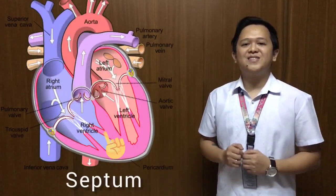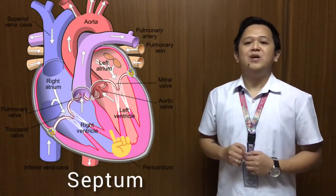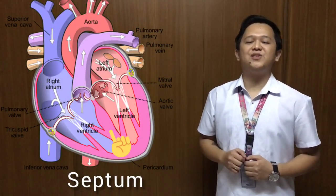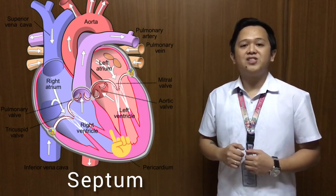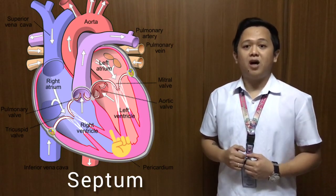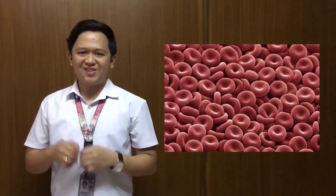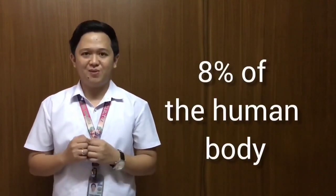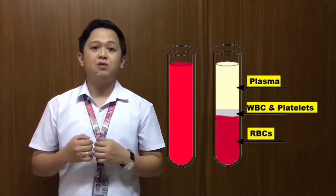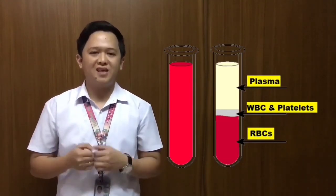A wall of tissue called the septum divides the heart in half, prevents blood from flowing between the two atria or two ventricles, and separates the flow of oxygenated or oxygen-rich blood and deoxygenated or oxygen-poor blood. Let us remember that oxygenated blood carries more oxygen from the lungs to deliver to the body tissues, while deoxygenated blood carries more carbon dioxide to be expelled from the body. Our blood is also known as the river of life. It transports a variety of essential elements throughout the body. The blood comprises 8% of the human body — an average adult has about 5 liters of blood. The blood has two components: the plasma and the formed elements, also called corpuscles, which are suspended in the plasma.